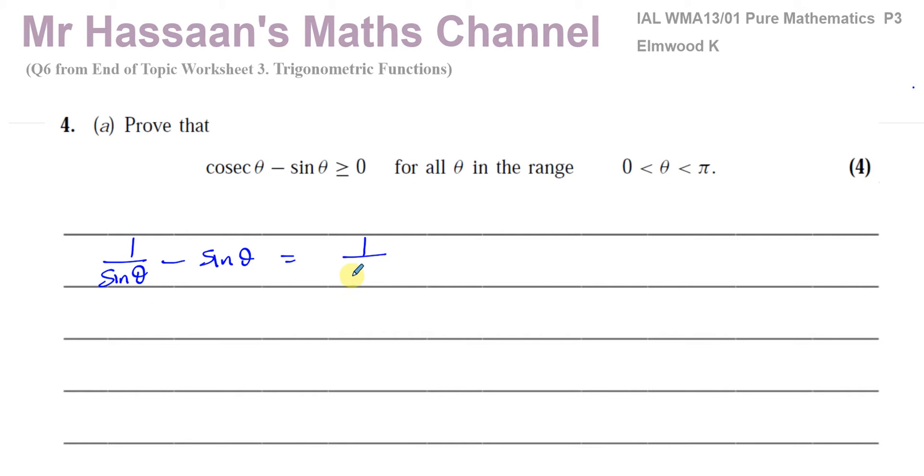So this is 1 over sin θ minus... If I make this over sin θ, I have to multiply the top by sin θ. So I'm going to get sin²θ. So you have 1 minus sin²θ over the same denominator of sin θ. So you have 1 minus sin²θ over sin θ.